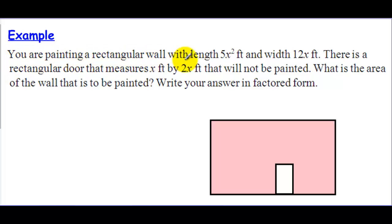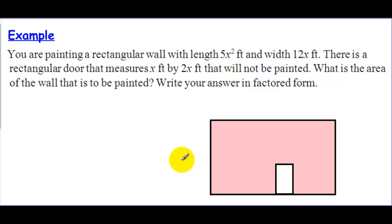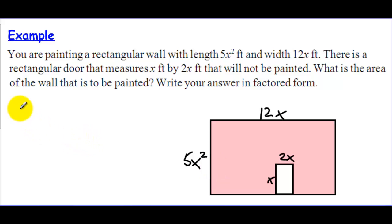Let's look at one more shaded region example. You are painting a rectangular wall with a length of 5x² feet and a width of 12x feet. There is a rectangular door measuring x by 2x that you're not going to paint, and they want to know how much of the wall will be painted, with the answer in factored form. The wall is the big rectangle and the door is a small hole in it. We label the wall as 5x² by 12x, and the door as x by 2x.